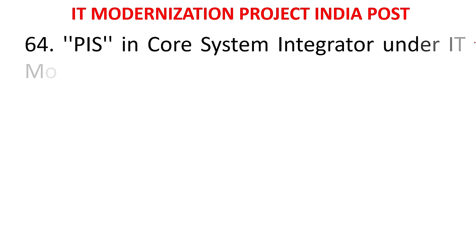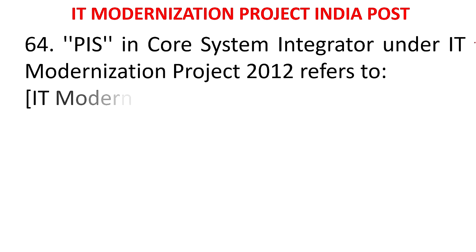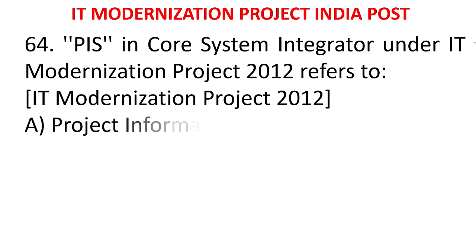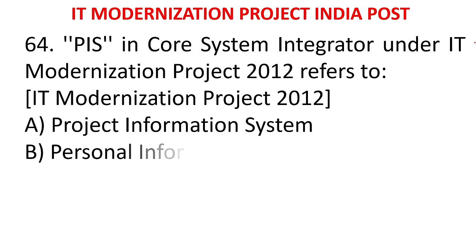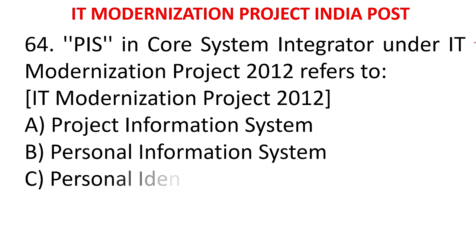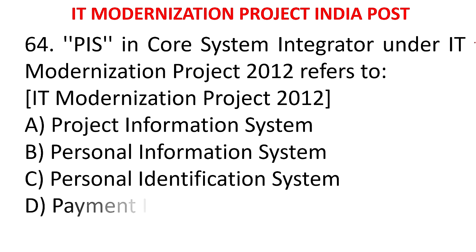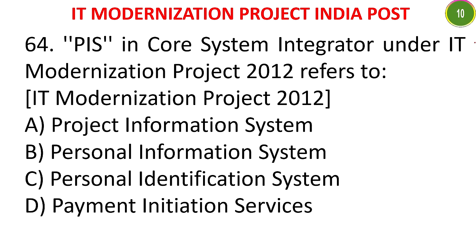MCQ 62: PIS in core system integrator under IT modernization project 2012 refers to - A) Project Information System, B) Personal Information System, C) Personal Identification System, D) Payment Initiation Services. The answer is Personal Information System.